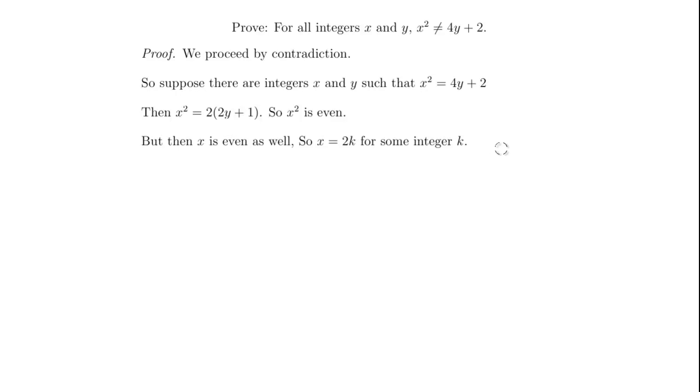Well if x is 2 times k we can go back and get x squared. x squared must be 4k squared. And if x squared is 4k squared we can substitute that back into our original equation.